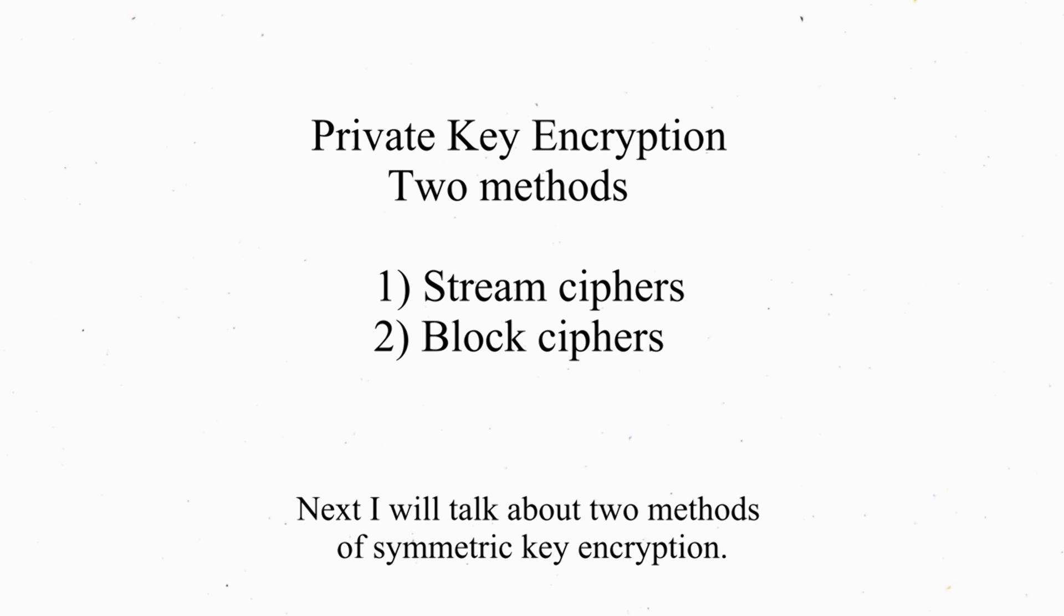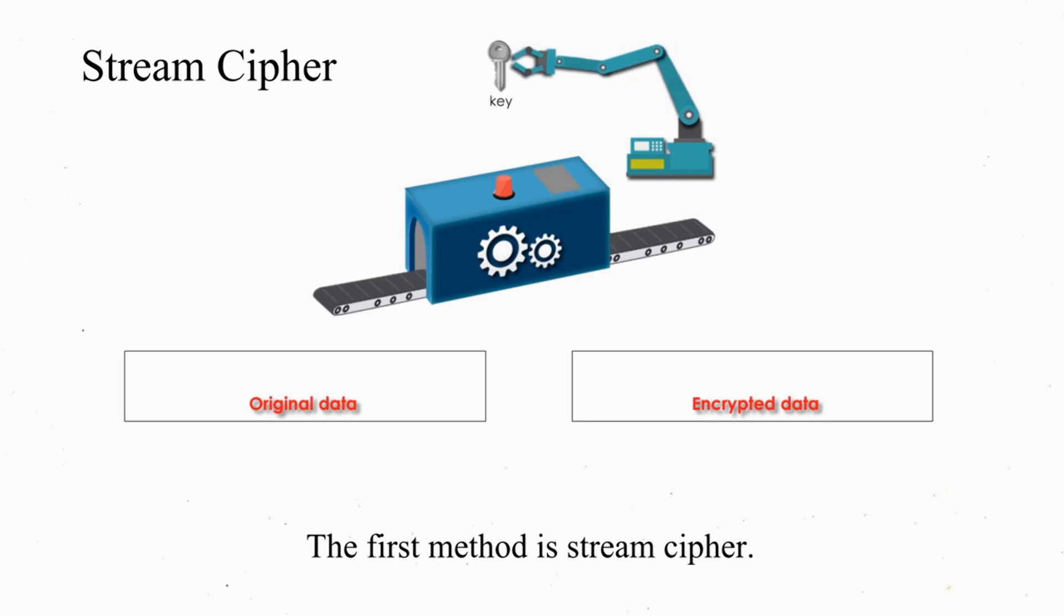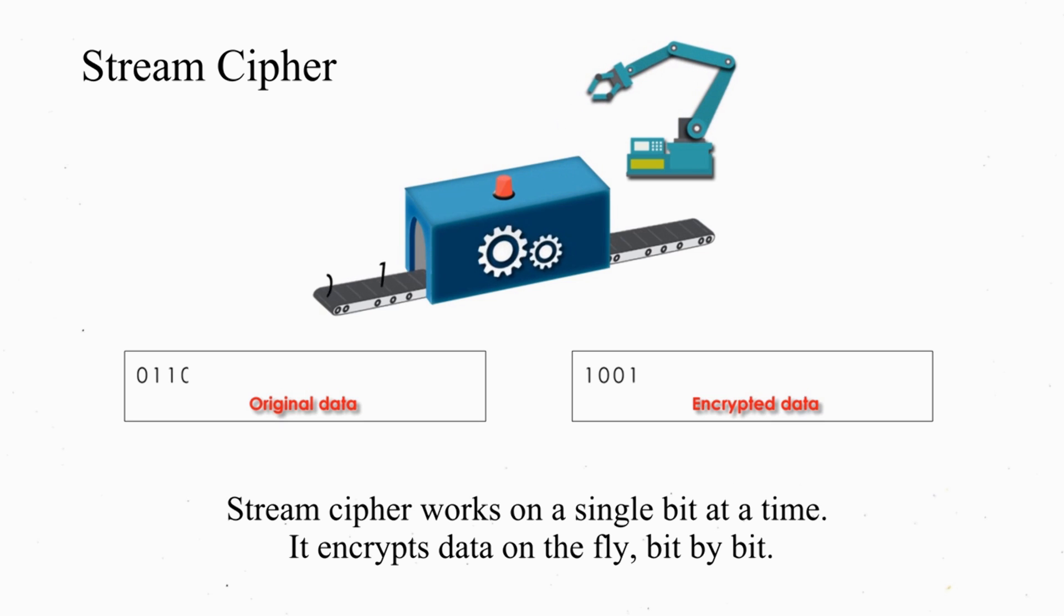Next, I will talk about two methods of symmetric key encryption. The first method is stream cipher. Stream cipher works on a single bit at a time. It encrypts data on the fly, bit by bit.